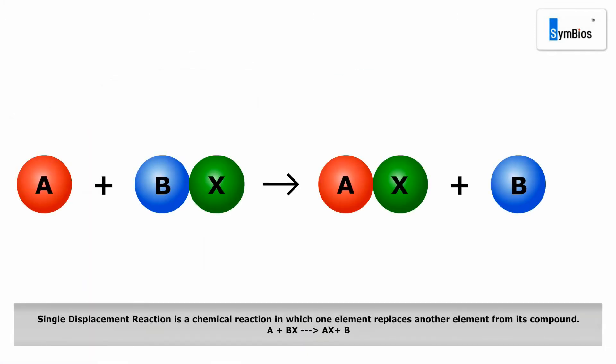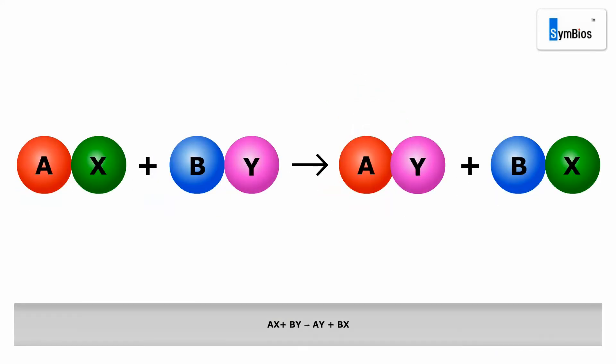Single displacement reaction is a chemical reaction in which one element replaces another element from its compound. Double displacement reaction is a reaction in which two different atoms or groups of atoms of reactants exchange their places.